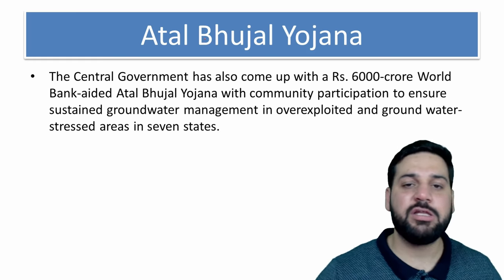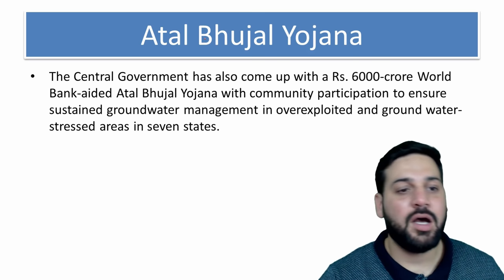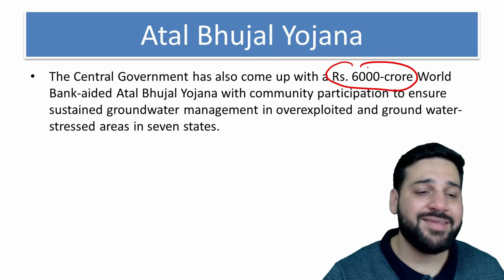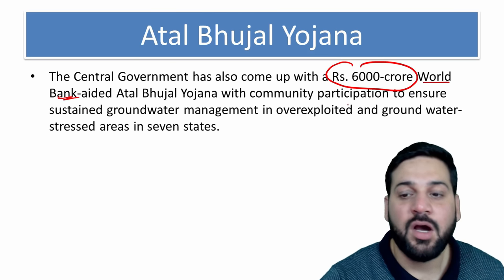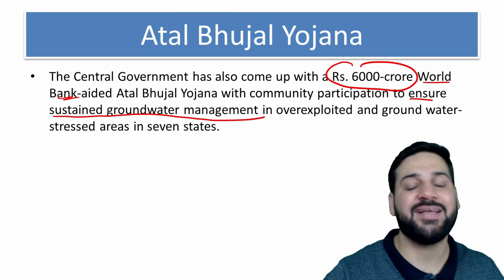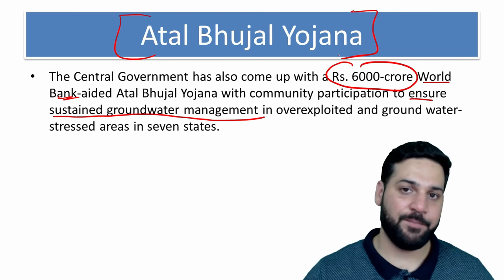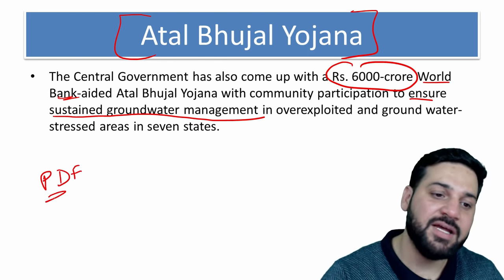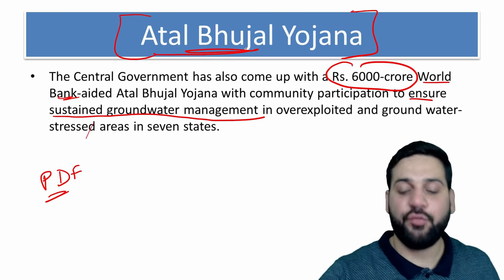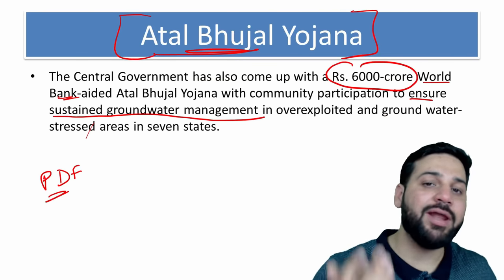The Atal Bhujal Yojana addresses the depleting groundwater level. The central government has come up with a 6,000 crore program aided by the World Bank to ensure sustained groundwater management in overexploited and groundwater-stressed areas across seven states of India. Links to full articles on Atal Bhujal Yojana and Swajal Yojana are available at the end of the PDF for in-depth reading.